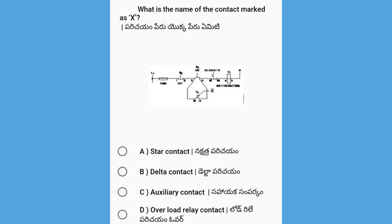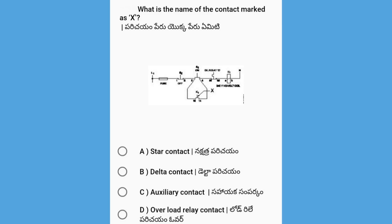Next, what is the name of the contact marked as X in the diagram? The options are Star Contact, Delta Contact, Auxiliary Contact, and Overload Relay Contact. The answer is Auxiliary Contact.